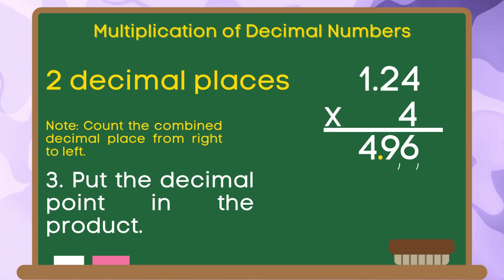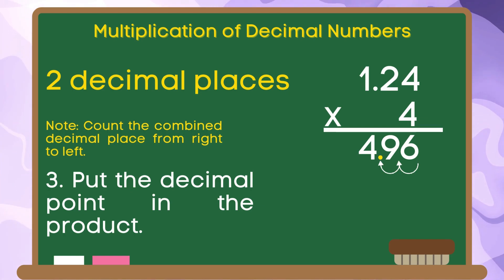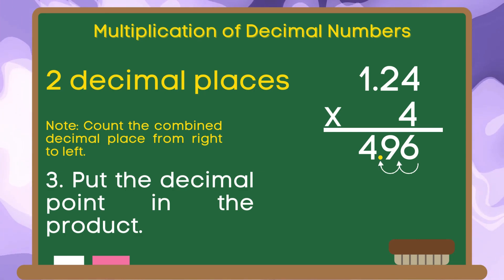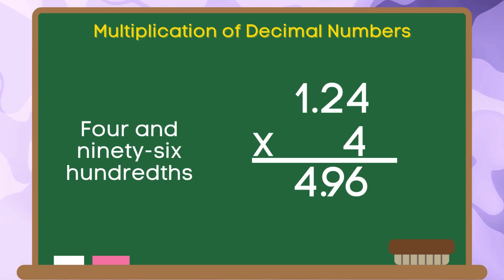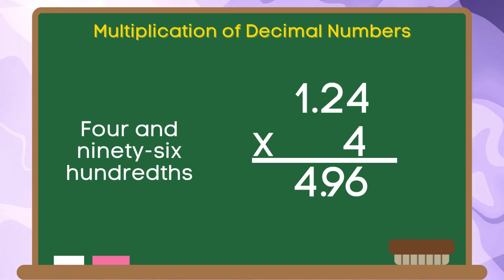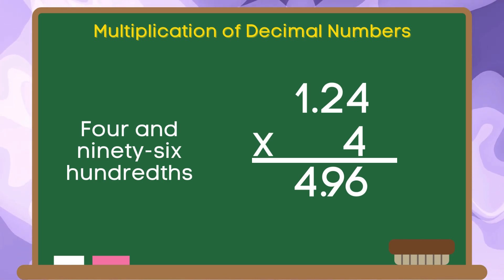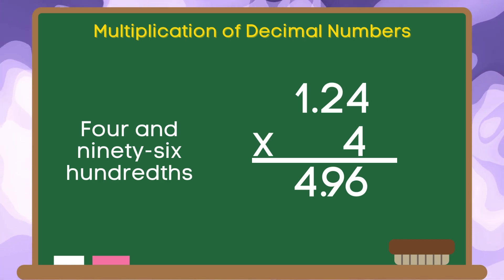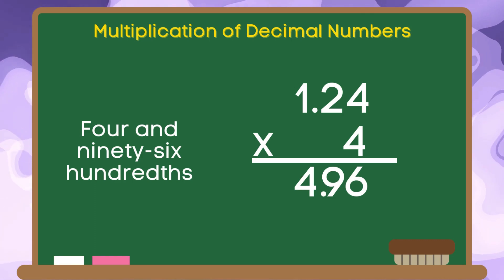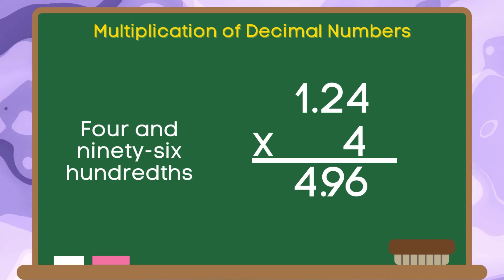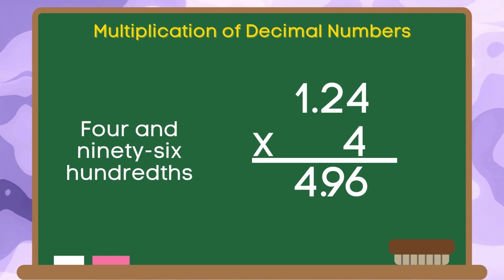The position of our decimal point is in between 4 and 9. Therefore, if we are going to multiply 1 and 24 hundredths by 4, the answer is 4 and 96 hundredths.